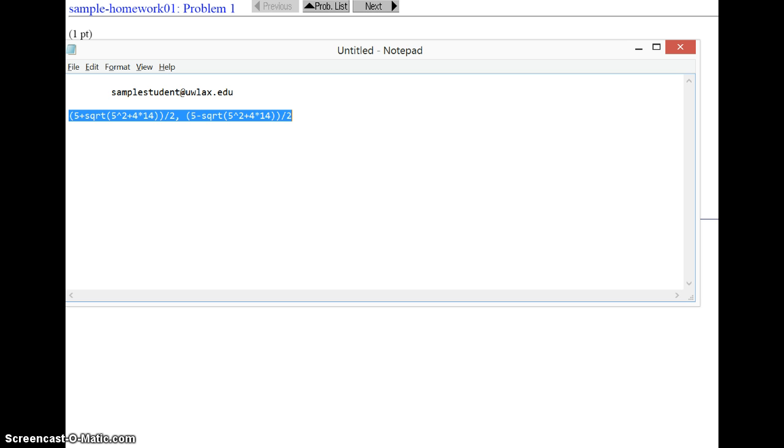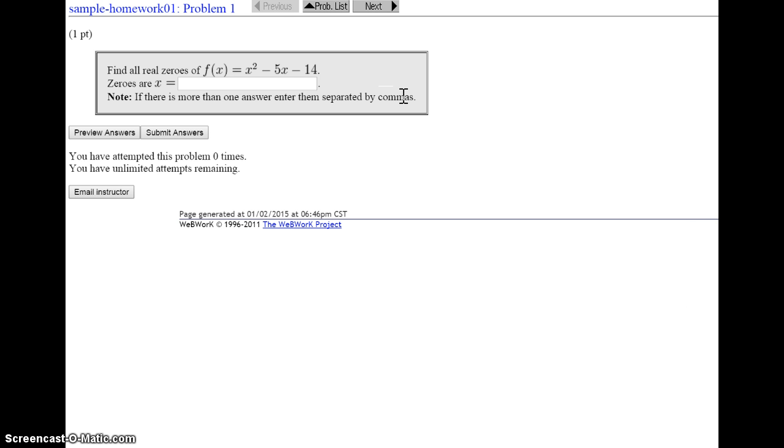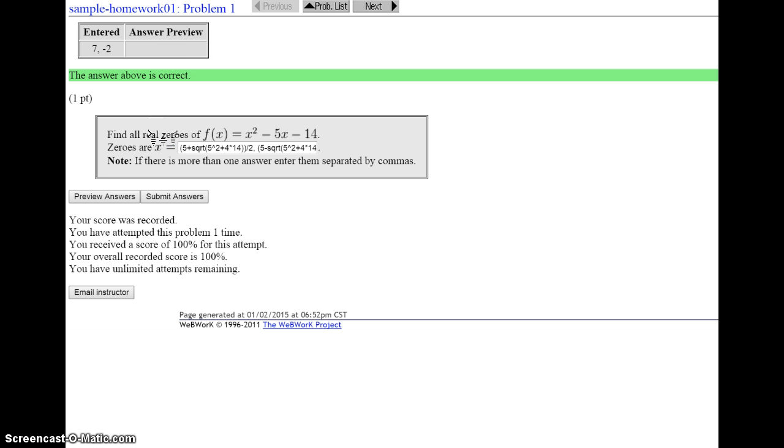We can now take this entire thing, copy that in the clipboard with a Ctrl-C, go back to the web, and then right here, paste in that answer. And it's hard to see, in fact, both of the answers right here, but they're here. They're separated by a comma, and you can click Submit.